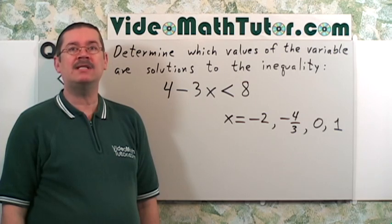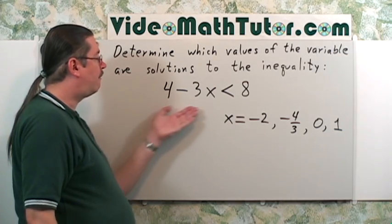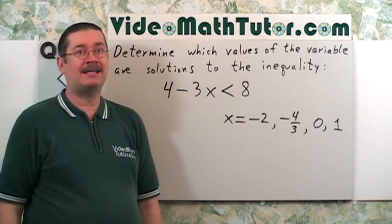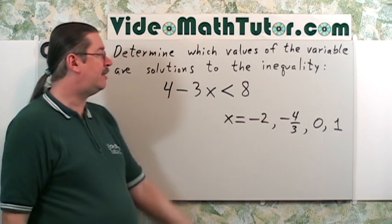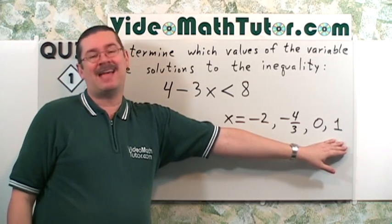Determine which values of the variable are solutions to the inequality 4 minus 3x is less than 8. Try the values x equals negative 2, negative 4 thirds, 0, and 1.